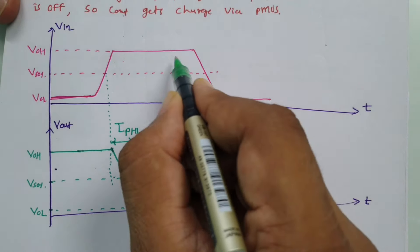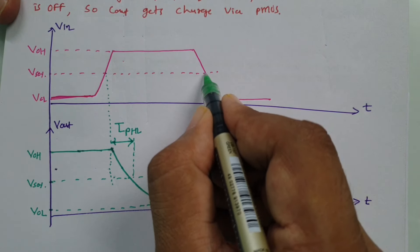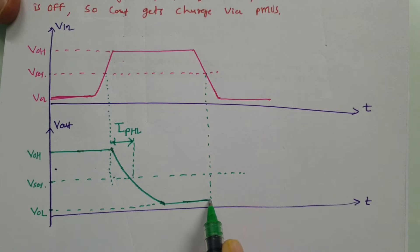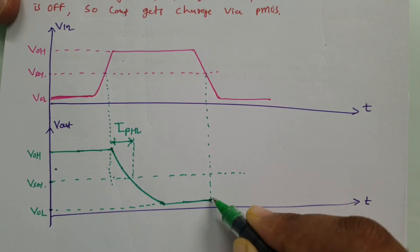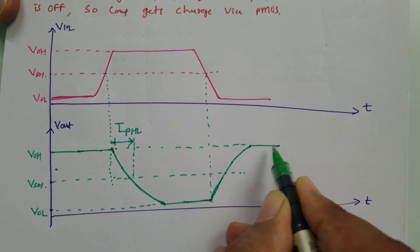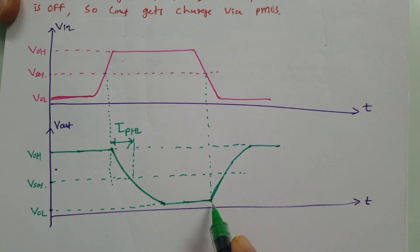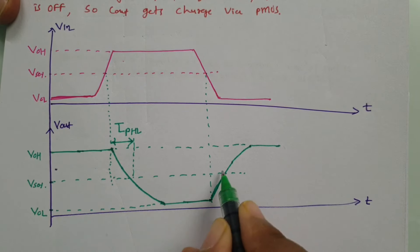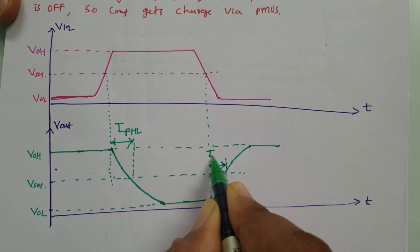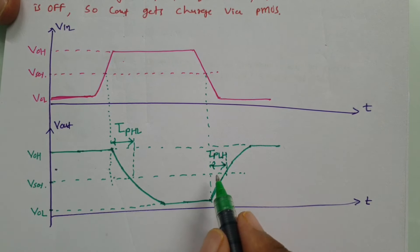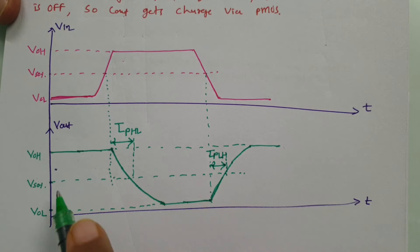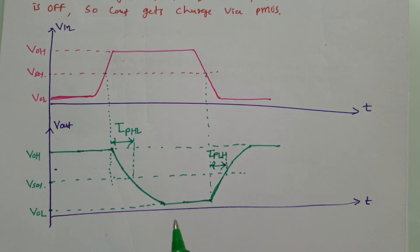For low-to-high propagation delay: when the input transitions from high to low and reaches 50%, the output starts to charge and rises from VOL up to VOH. The time from when input crosses 50% to when output reaches 50% of its swing is the propagation delay from low to high, t_pLH. This represents the output increasing from minimum voltage to 50% of output voltage.